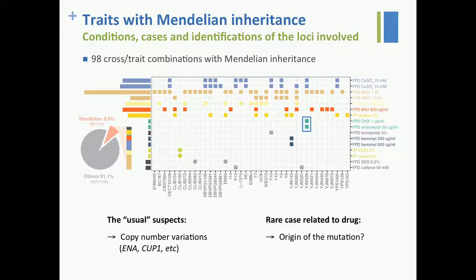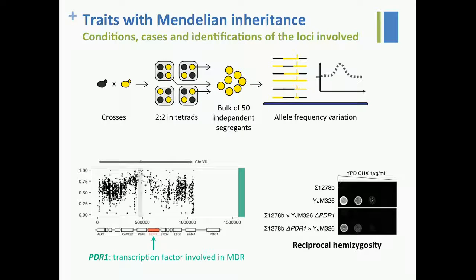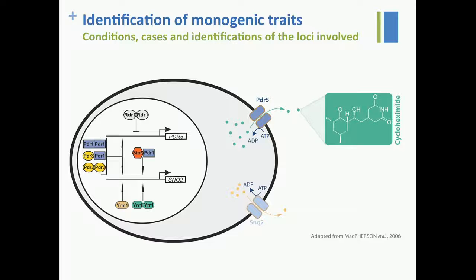We focused on one rare case related to drug resistance — more precisely, cycloheximide and anisomycin resistance. We did the same approach: bulk segregation analysis followed by whole genome sequencing. We found one region on chromosome 7, and in this region we found the gene PDR1, a transcription factor involved in multidrug resistance. By reciprocal hemizygosity, we confirmed that this gene is involved in the phenotype, and we identified the specific mutation responsible. PDR1 is a transcription factor that activates PDR5, a transporter that exports cycloheximide — so it makes functional sense.